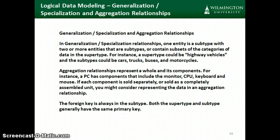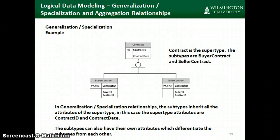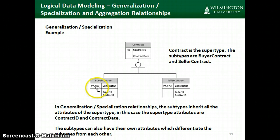Whether we're talking about the generalization-specialization category or the aggregation category of relationships, the foreign key is always going to go into the subtype. So let's look at an example. We could create a supertype entity called contracts because we have two types of contracts in the real estate example — buyer contracts and seller contracts. Typically, they're all going to have the same primary key, the contract ID. And the foreign key in the subtype is going to match back to the primary key in the supertype.